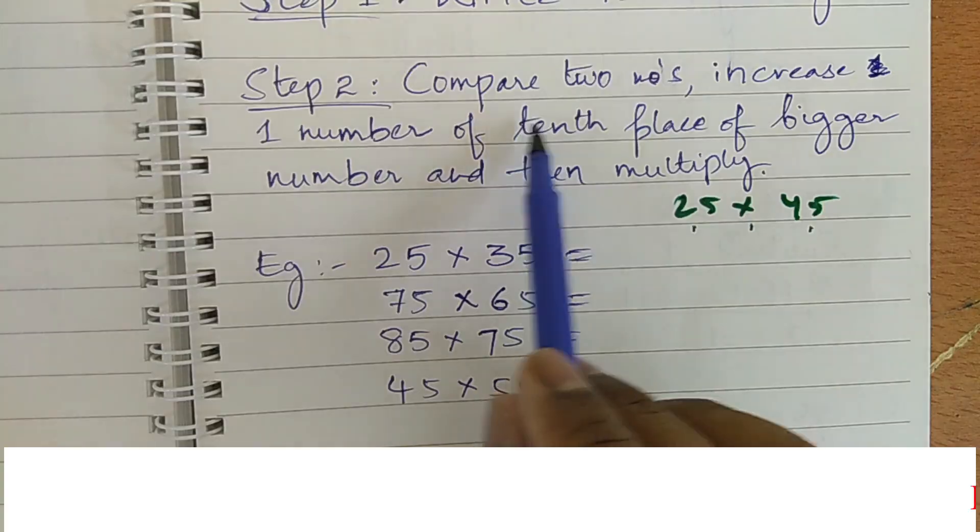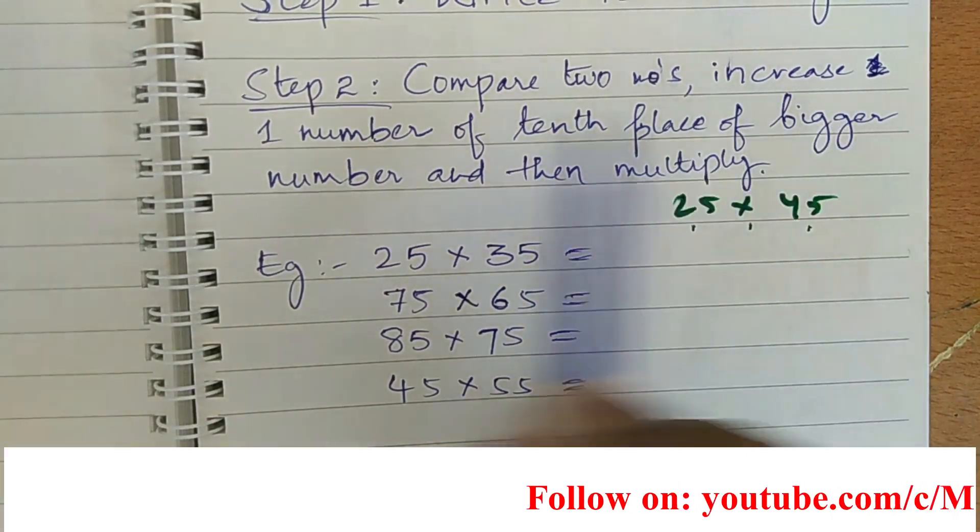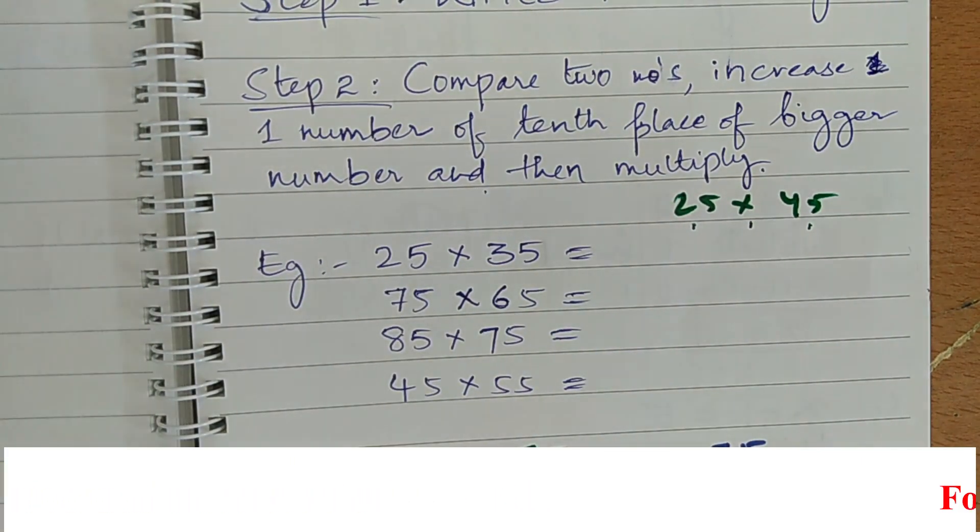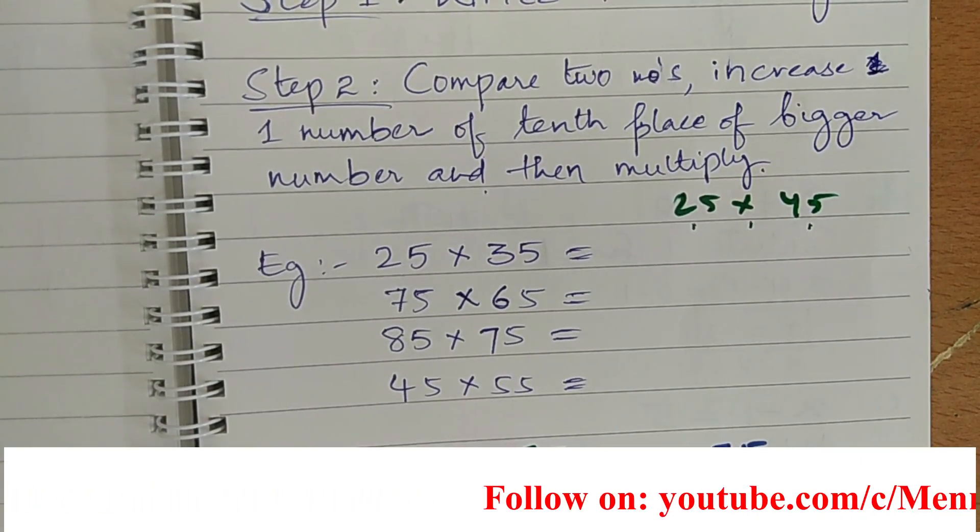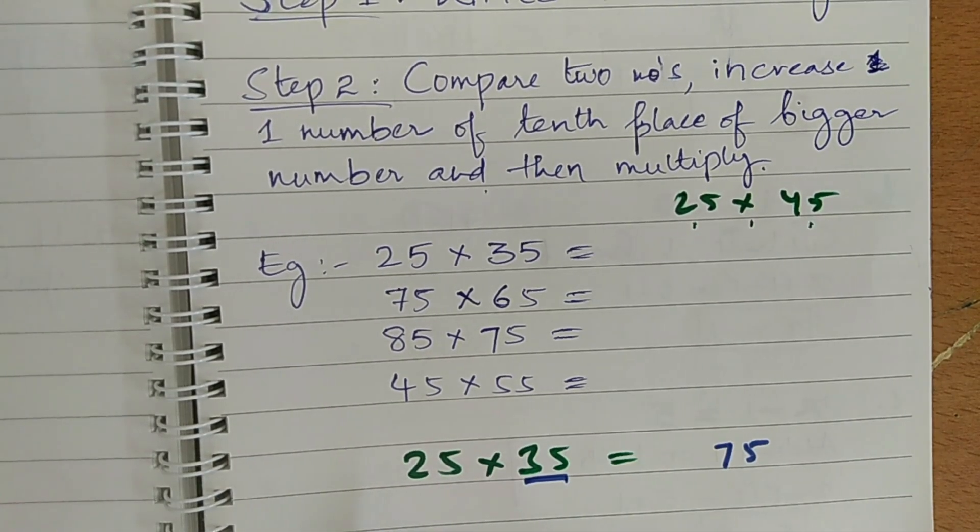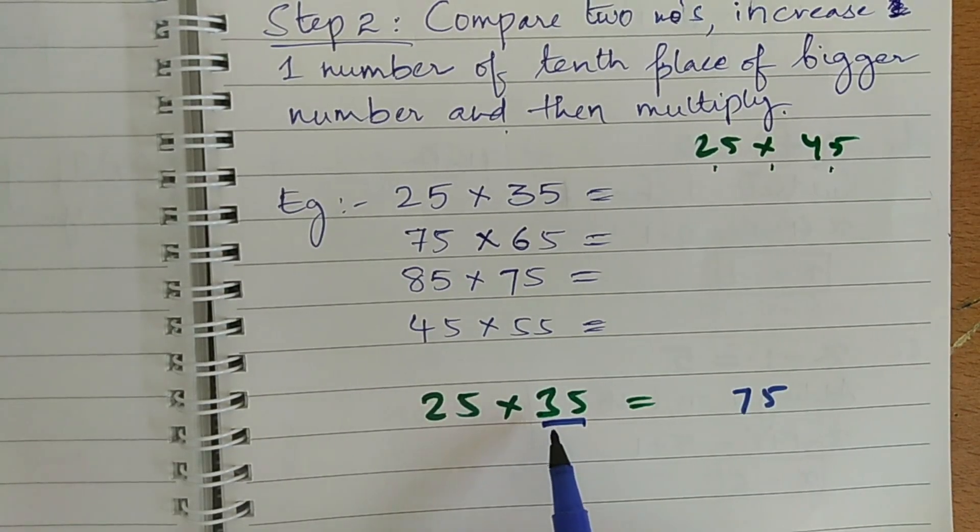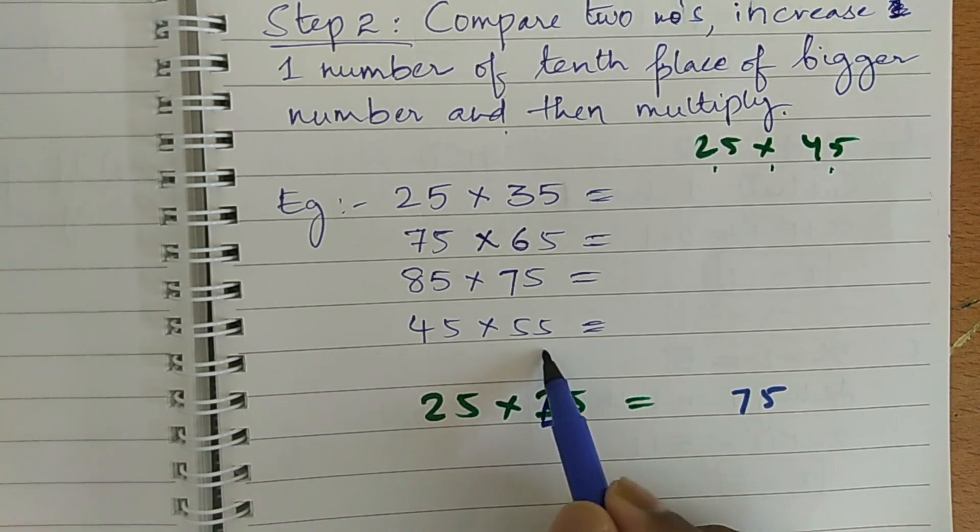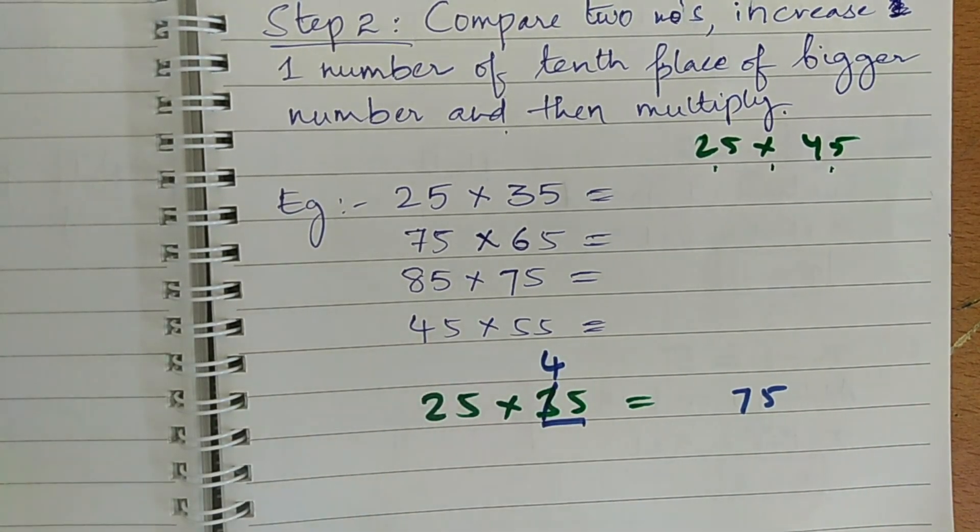The next step, the second step is compare two numbers. Increase one number of 10th place of bigger number and then multiply. So, here first you should compare these two numbers, 35 is the biggest number here. So, 3 is in 10th place. Just, we have to increase one number in the 10th place. So, I will increase one number here. 4.